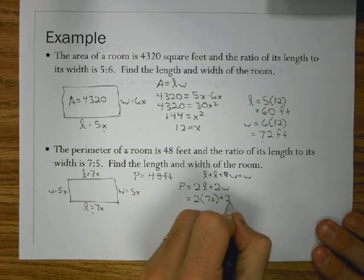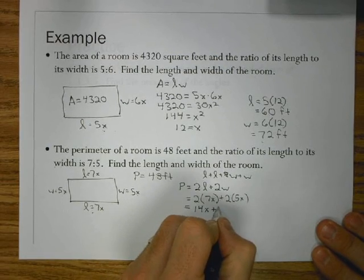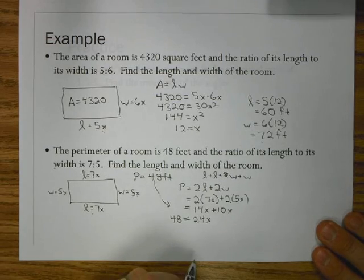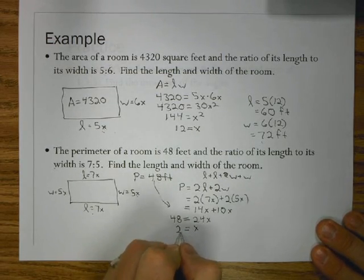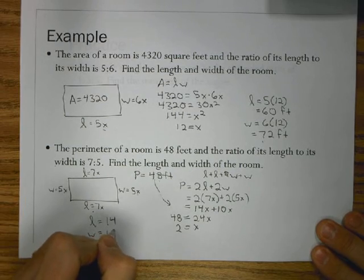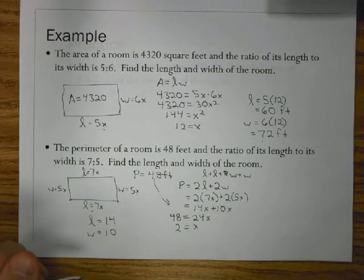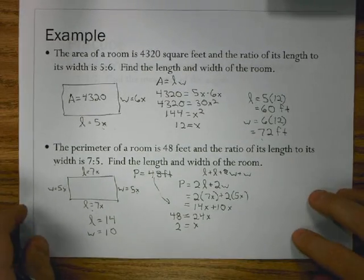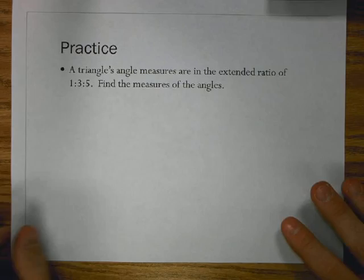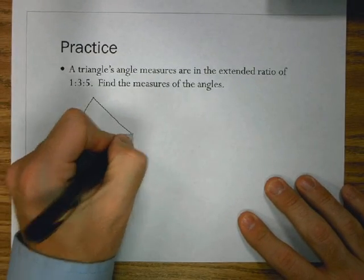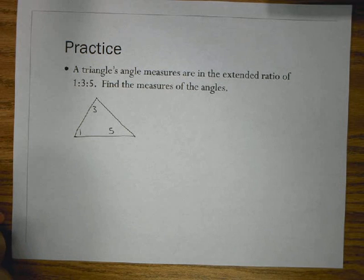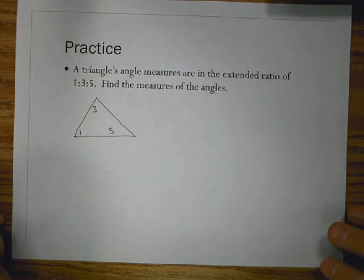So, perimeter. We could write it as 2 times the length plus 2 times the width. So, 2 times 7X plus 2 times 5X gives me 14X plus 10X, which is 24X. Now, we know our perimeter is 48. If I divide 48 by 24, I get X equals 2. That means my length is 14. My width is 10. If we check real fast, 14 and 10, if I added those up and then added them again, I would get 48. So, 14 feet and 10 feet.